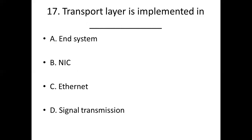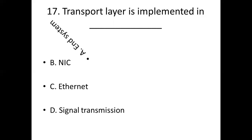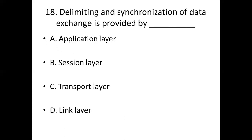Question 17: Transport layer is implemented in dash. Option A: end system. Option B: NIC. Option C: ethernet. Option D: signal transmission. Answer: Option A, end system.